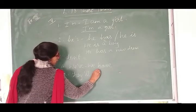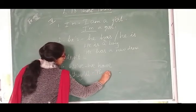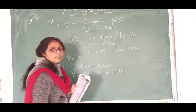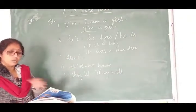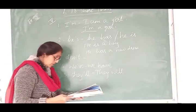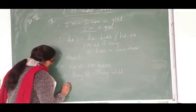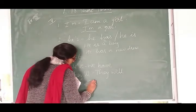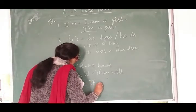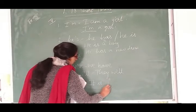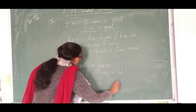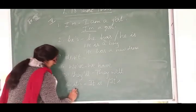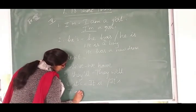Then, they apostrophe L, apostrophe double L iska kya form hai? They will. They will come to my house today, they will go for a cinema okay. Then next, its, uska form kya hai? It is. It is my pen ya phir its my pen aise bhi likh sakte ho okay.